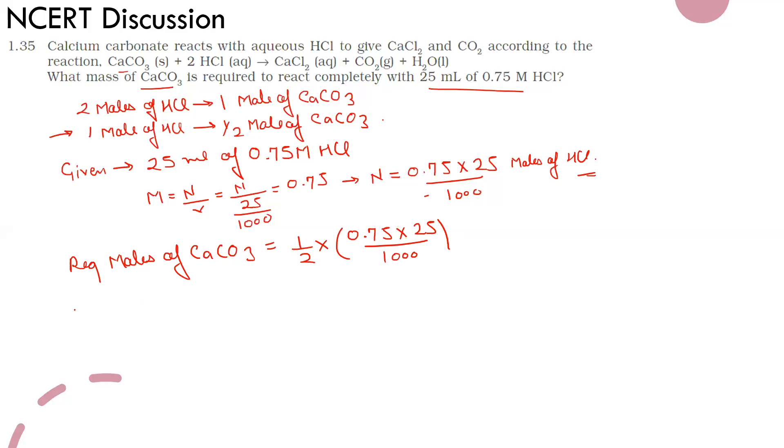Now what is the molar mass of CaCO3 or calcium carbonate? It will be 40 plus carbon 12 plus oxygen 3 times 16. This equals 100 grams per mole.